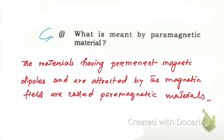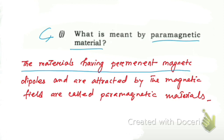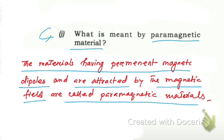Next: what is meant by paramagnetic material? Those materials having permanent magnetic dipoles that are attracted by a magnetic field are called paramagnetic materials.